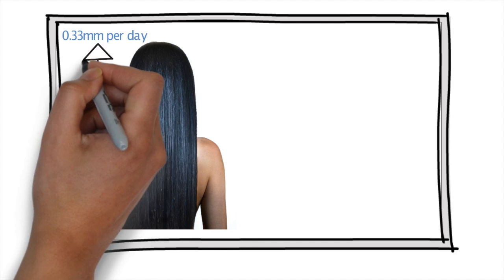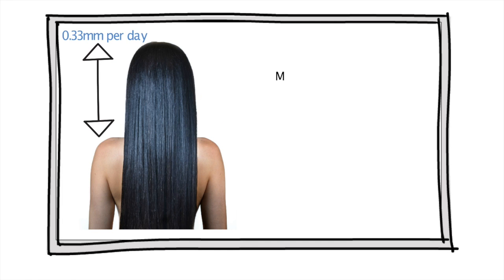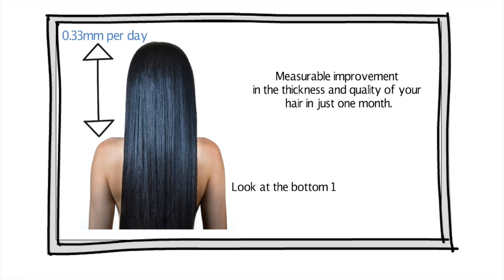A hair in the scalp grows at a rate of about 0.33 millimeters per day. If you are generally healthy, you can see a real measurable improvement in the thickness and quality of your hair in just one month. Look at the bottom 10 millimeters of the hair shaft.